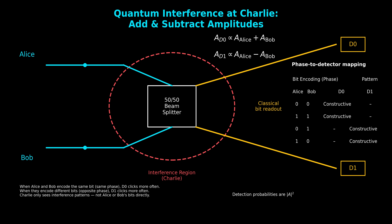Row 3: Alice 0, Bob 1. Now the phases oppose each other — the amplitudes subtract. This creates destructive interference at D0 and constructive interference at D1. Row 4: Alice 1, Bob 0. Same situation: opposite phases, so constructive interference moves to D1.